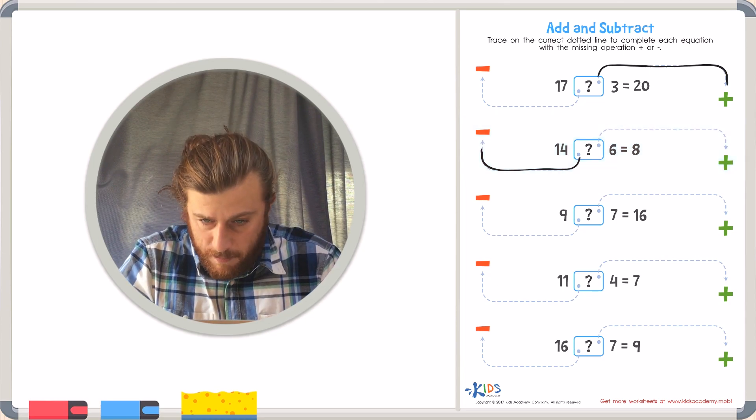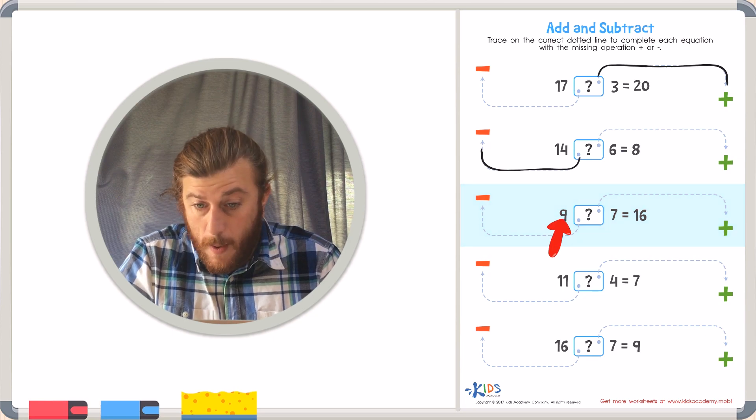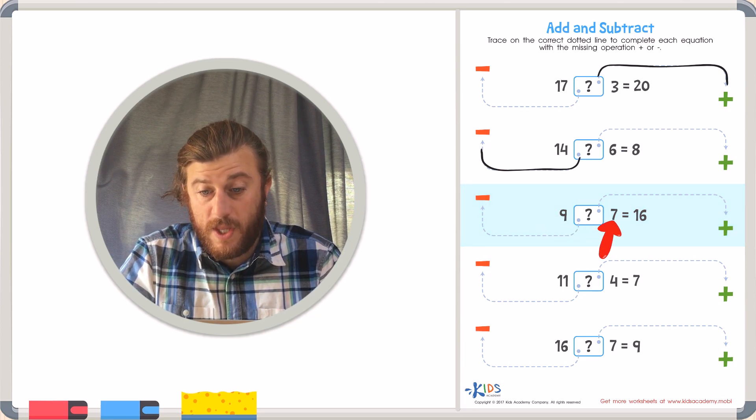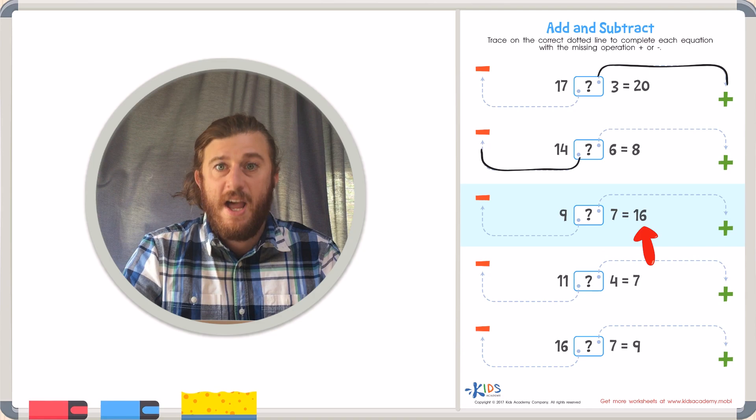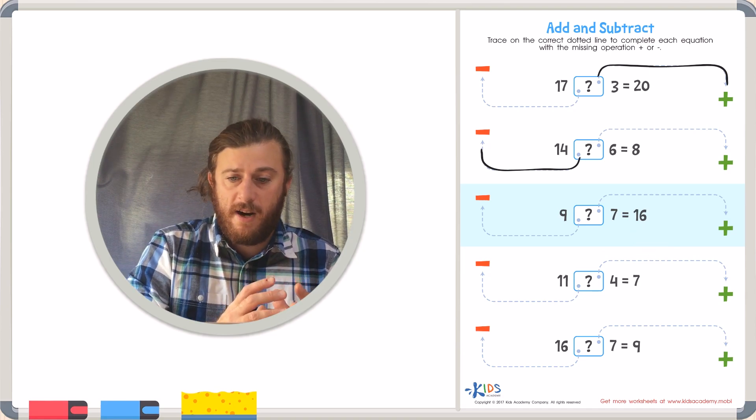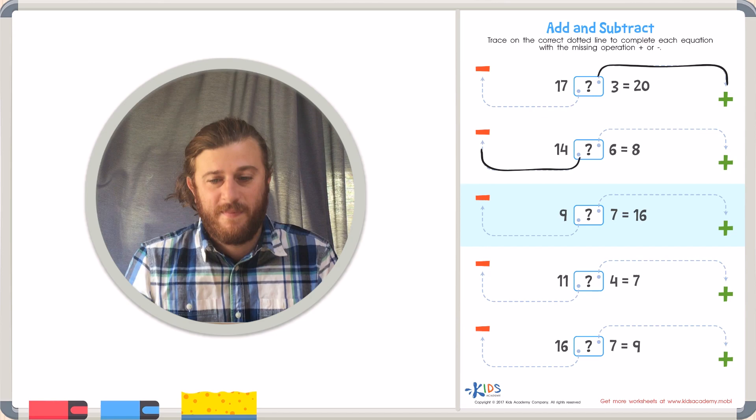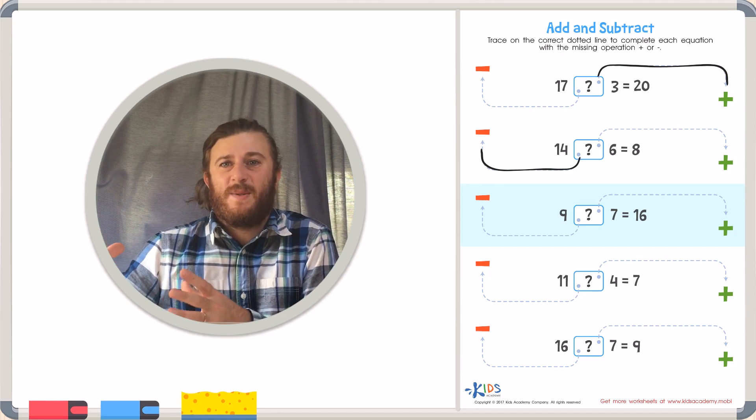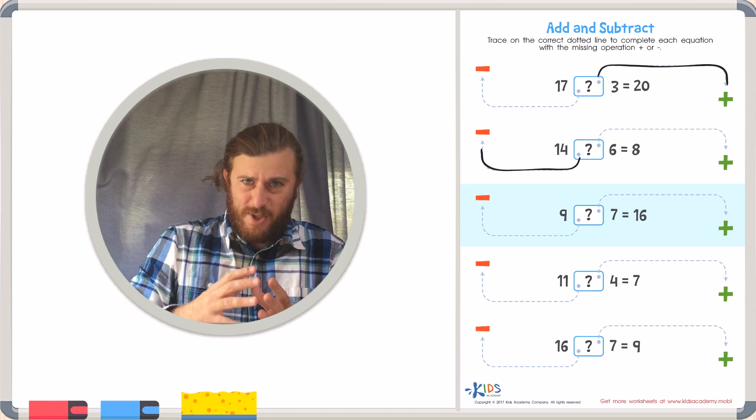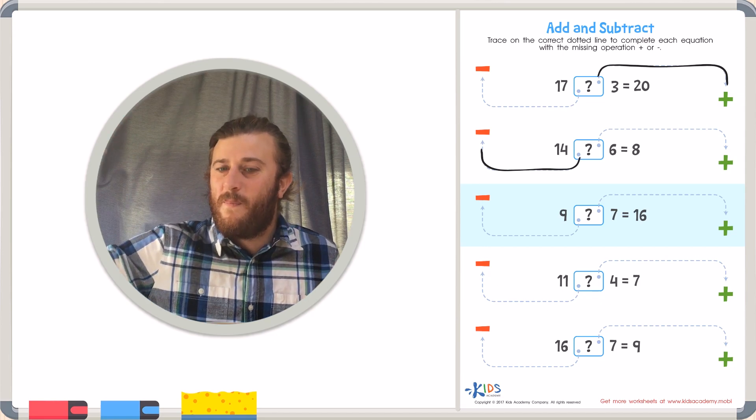In our third example we have 9 plus or minus 7 equals 16. Again we have our starting number of 9 and our ending number of 16. Our answer of 16 is bigger than 9. So we have to grow 16 or make it bigger.